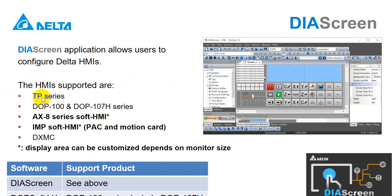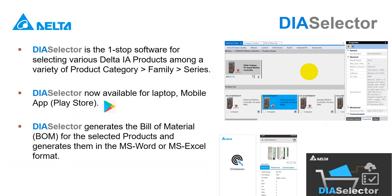DIA Screen supports more products — all display products, including text panels (TP), standard HMI, handheld HMI, AXA sub-HMI, IMP stop HMI, and the POC-based product DXMC. All these products can use DIA Screen to design the user interface. Finally, DIA Selector provides product selection, making it easier for you because you can check all the specs inside the software without needing to check the catalog one by one. That's all for today, thank you.